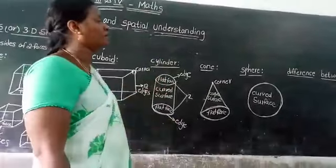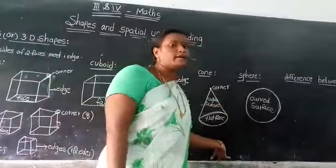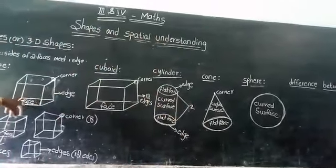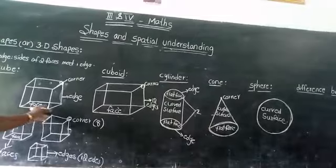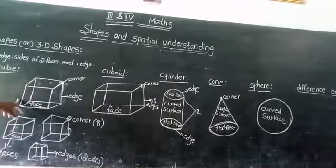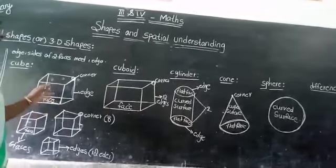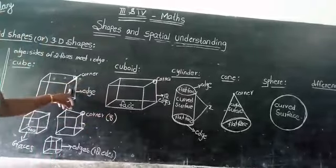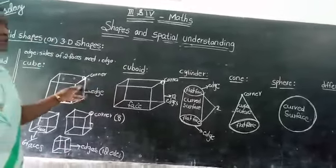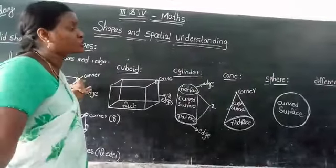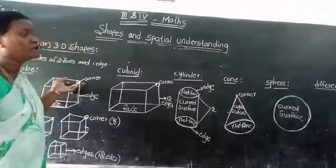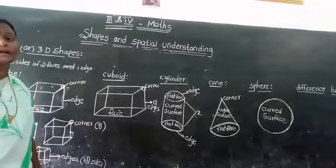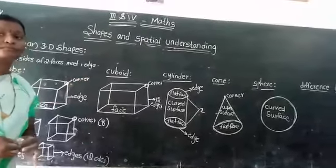Now the difference between cube and cuboid: every face of a cube is square-shaped, and in a cube all sides are equal. In a cuboid, every face is rectangular in shape and only the opposite edges are equal. This is the difference between cube and cuboid. Thank you.